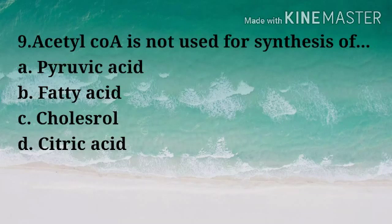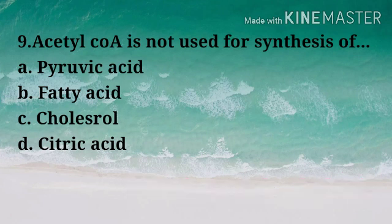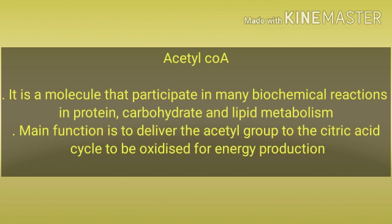Question: Acetyl coenzyme A is NOT used for synthesis of — Options: A) Pyruvic acid, B) Fatty acid, C) Cholesterol, D) Citric acid. Correct answer: Option A — Pyruvic acid. Acetyl coenzyme A is a molecule that participates in many biochemical reactions in protein, carbohydrate, and lipid metabolism. Its main function is to deliver the acetyl group to the citric acid cycle to be oxidized for energy production.